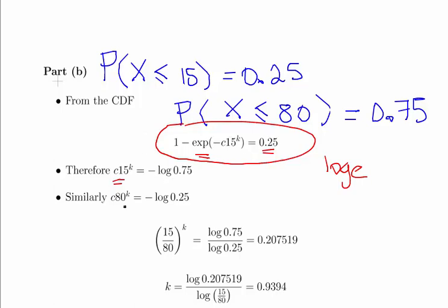And for 80, using 80, the upper quartile, third quartile, we would similarly get something like C times 80 to the power of K equals minus log of 0.25.